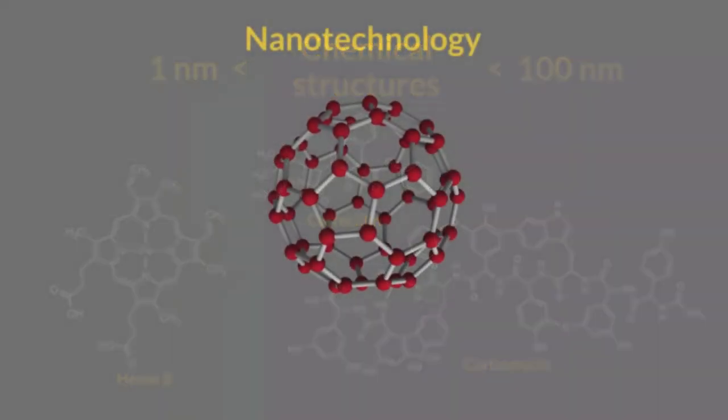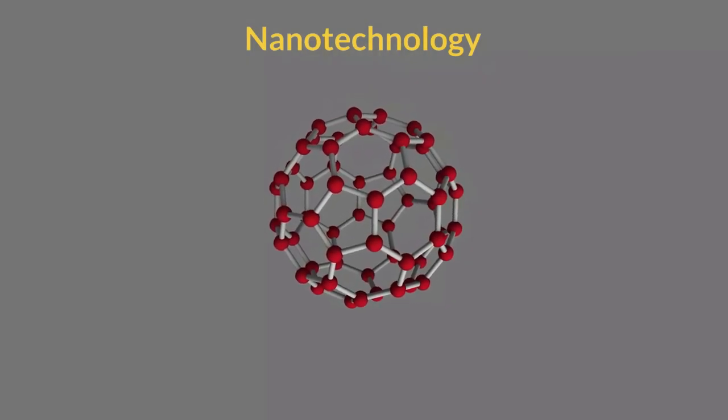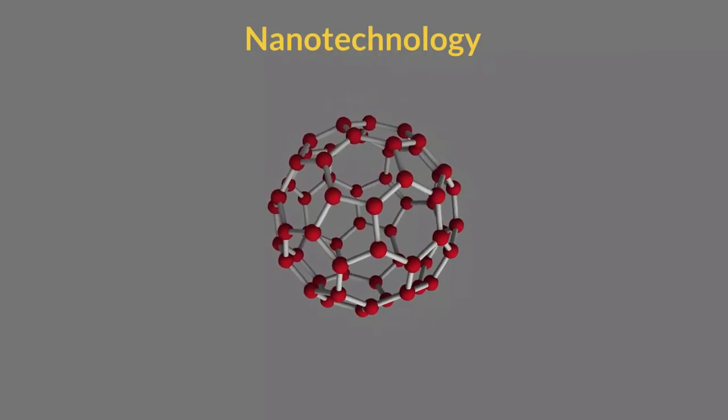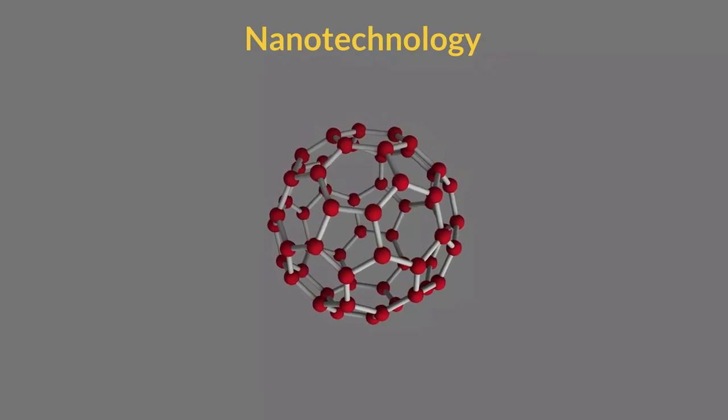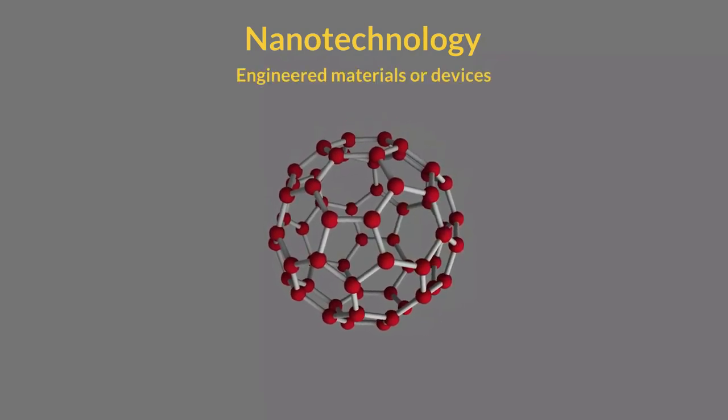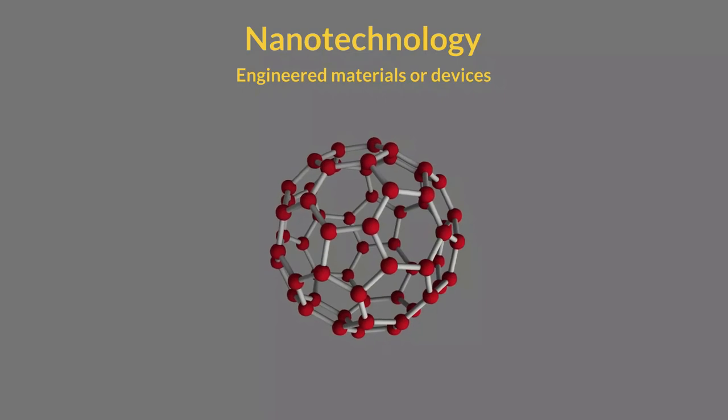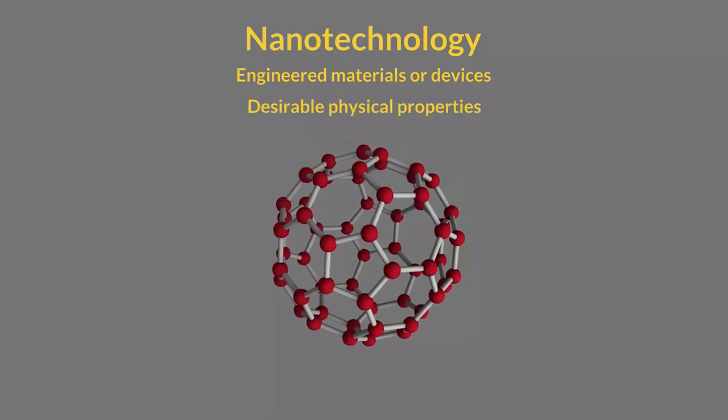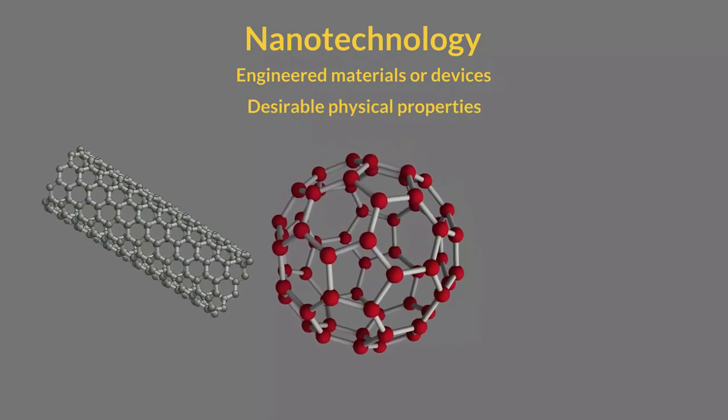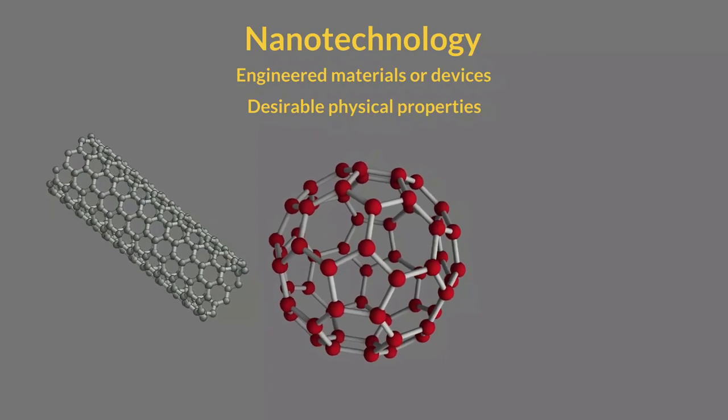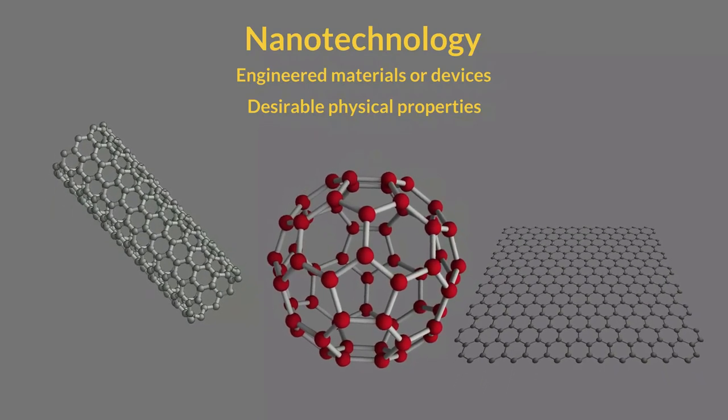One factor that may allow us to distinguish between nanotechnology and chemistry is the function which they serve. Nanotechnology is directed towards the development of engineered materials to make structures or devices and take advantage of desirable physical properties, such as the incredible strength of carbon nanotubes or the transparency and conductive properties of graphene.